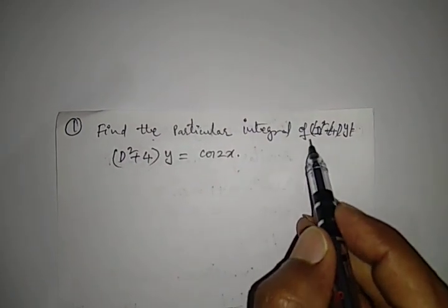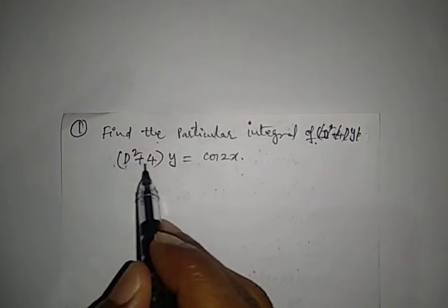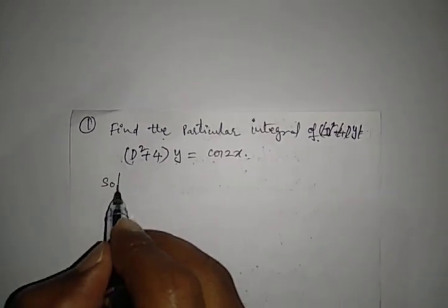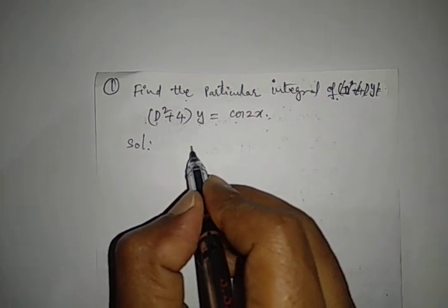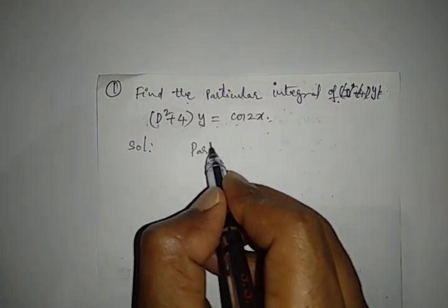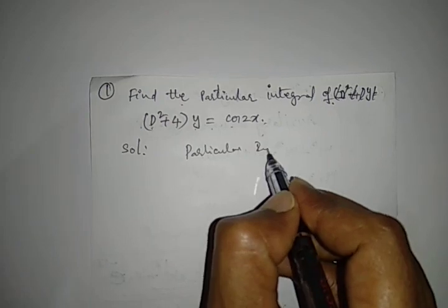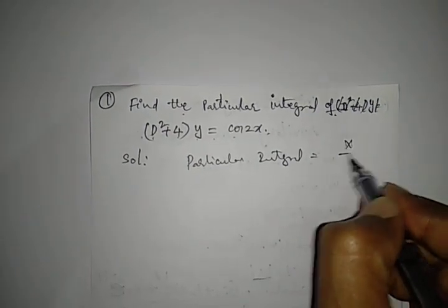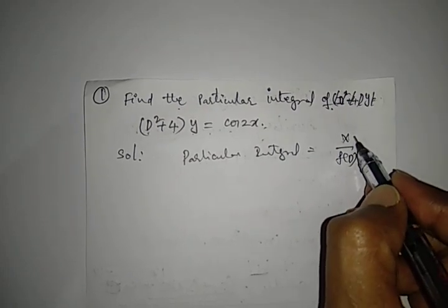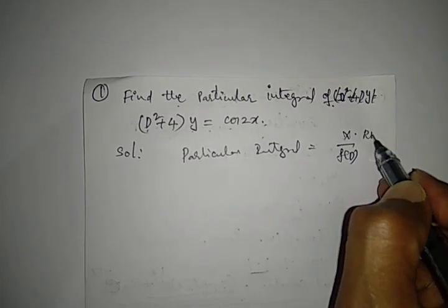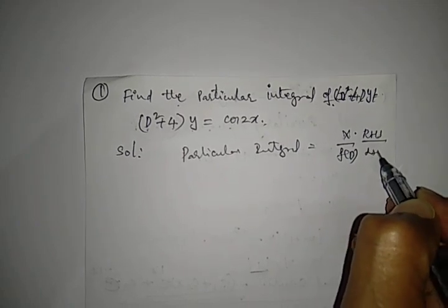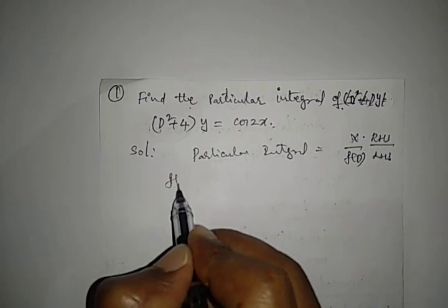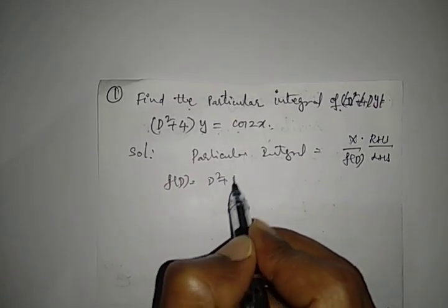Find the particular integral of (D² + 4)y = cos 2x. The formula for the particular integral is x divided by f(D), where x means the RHS value and f(D) means the LHS operator. Here f(D) is equal to D² + 4.